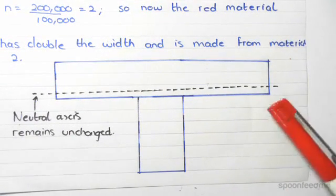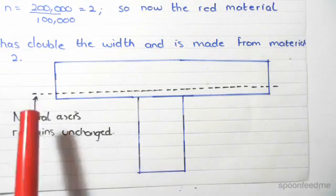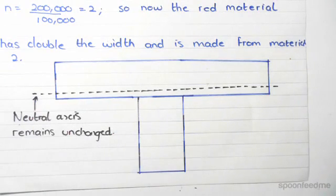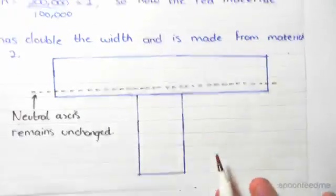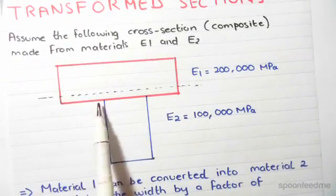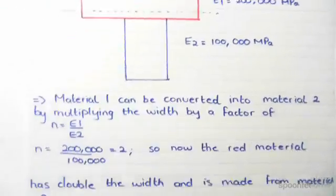The red material which was up here has now transformed into the blue one and has doubled the width. But bear in mind that this did not change the neutral axis. The neutral axis is still in the same position. As you can see here, the neutral axis was just above the bottom of the red material.